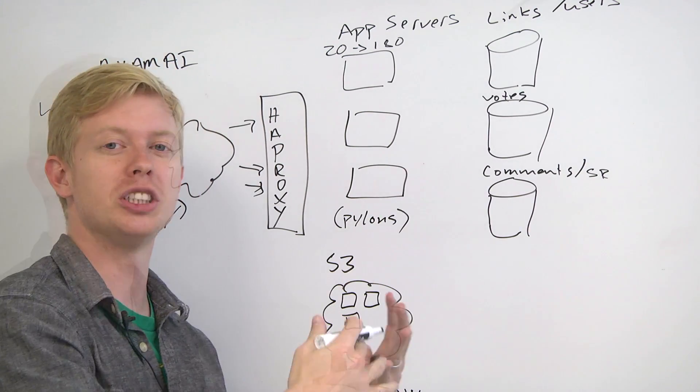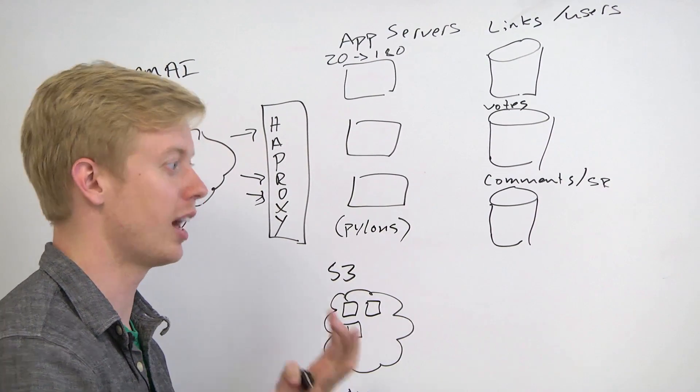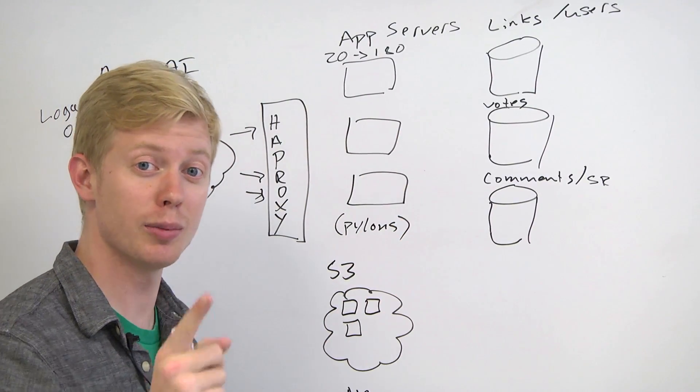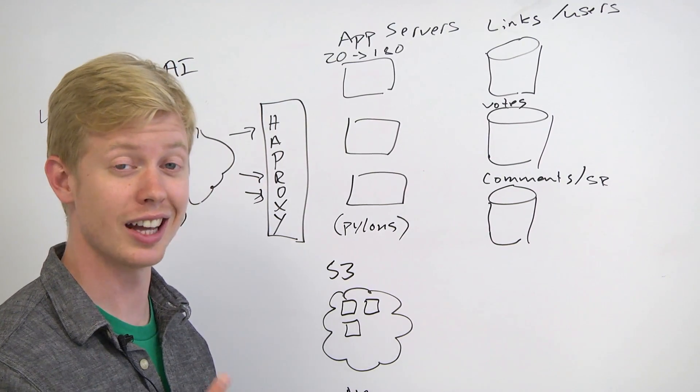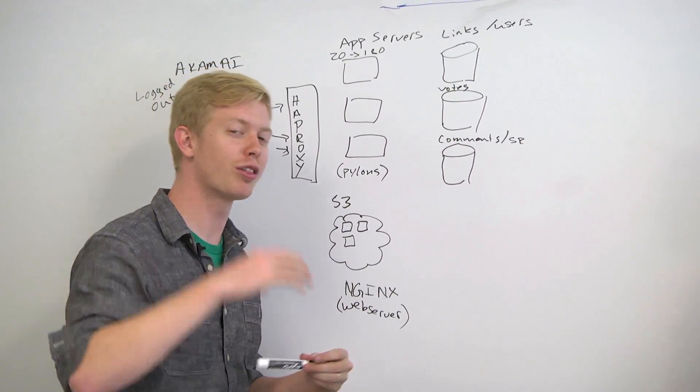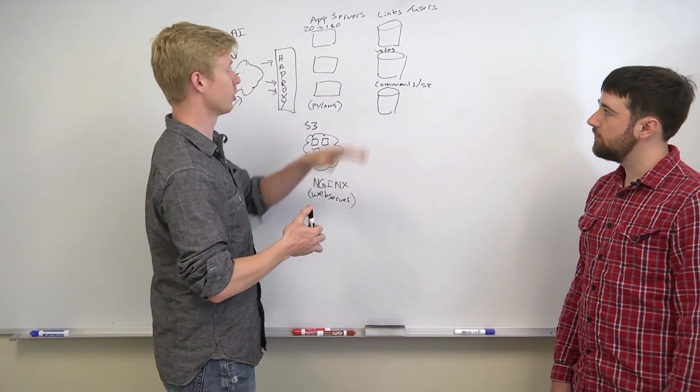When we first built the system, it was all on one machine, and we had different tables for each data type. A natural way to grow was to split apart the data types. Remember, I talked about how if you don't do joins, scaling is a lot easier. This is an example of that. You have to think a little bit harder about what your queries are going to be, but you can start splitting things apart.